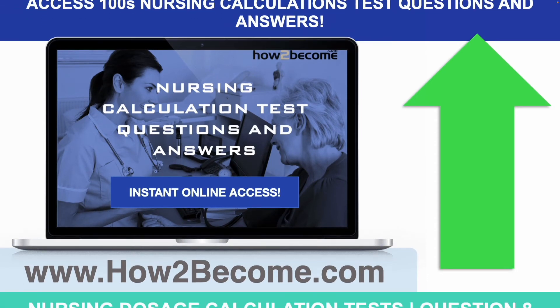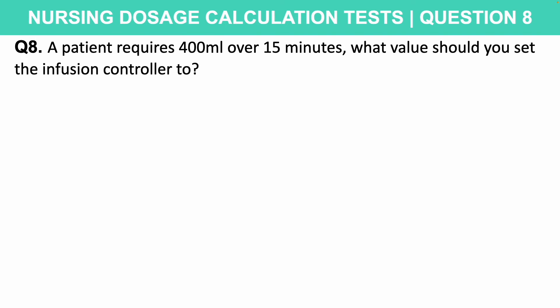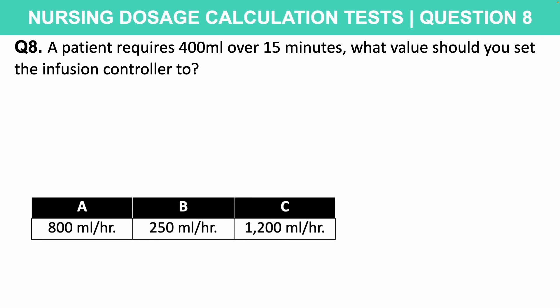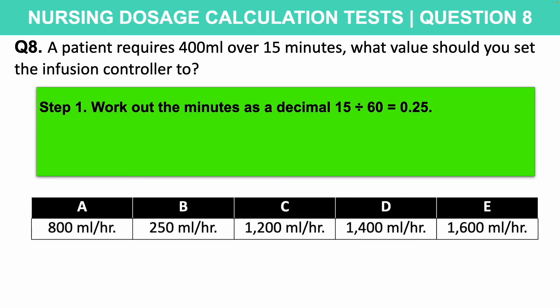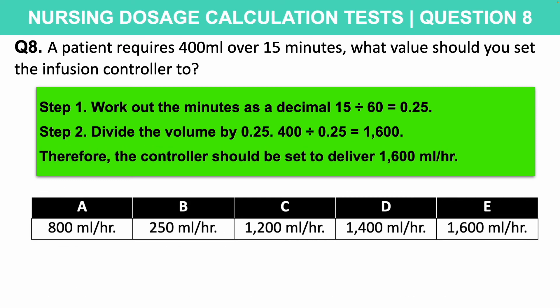Let's move on to questions based on working out the flow rate per minute. Question eight: a patient requires 400 millilitres over 15 minutes. What value should you set the infusion controller to? Is it A: 800 ml/hr, B: 250 ml/hr, C: 1200 ml/hr, D: 1400 ml/hr, or E: 1600 ml/hr? The process is: step one, work out the minutes as a decimal — 15 divided by 60 gives 0.25. Step two, divide the volume by 0.25, so 400 divided by 0.25 equals 1600. The correct answer is E: 1600 millilitres per hour.